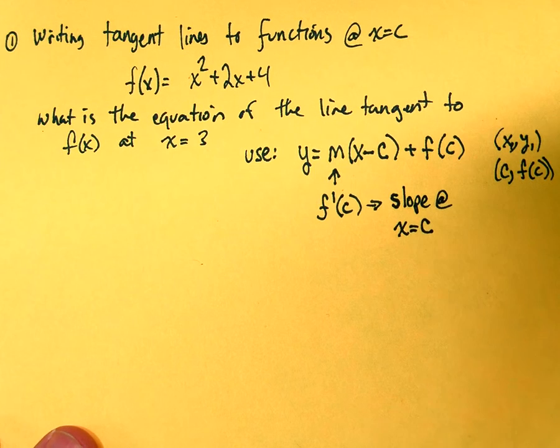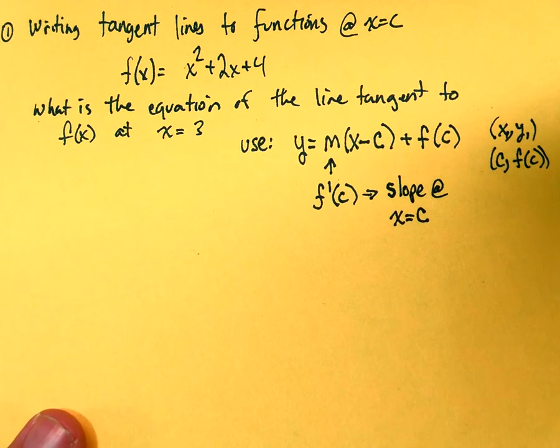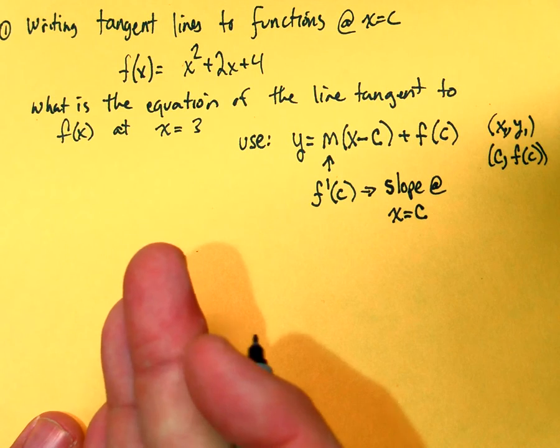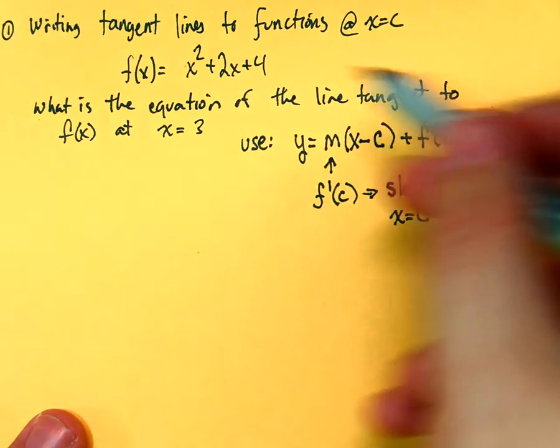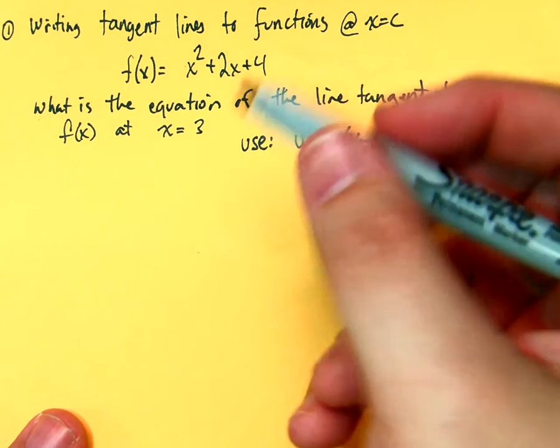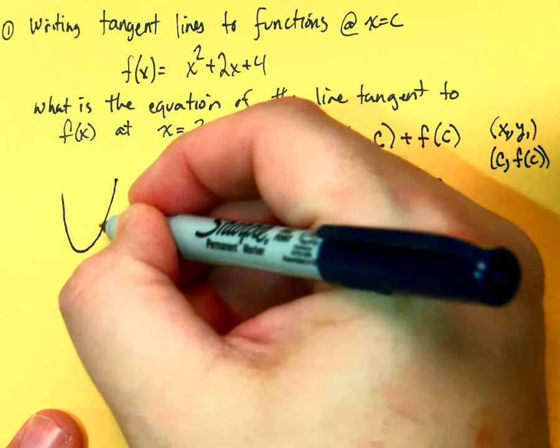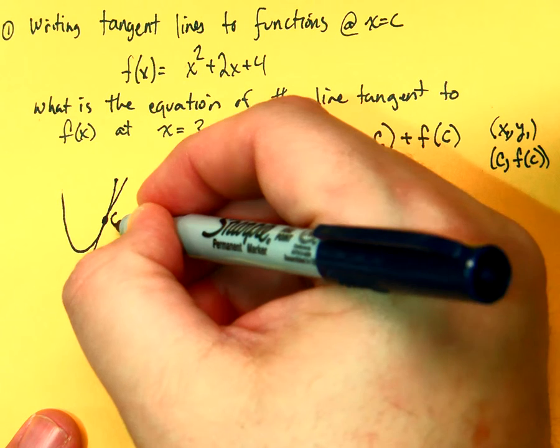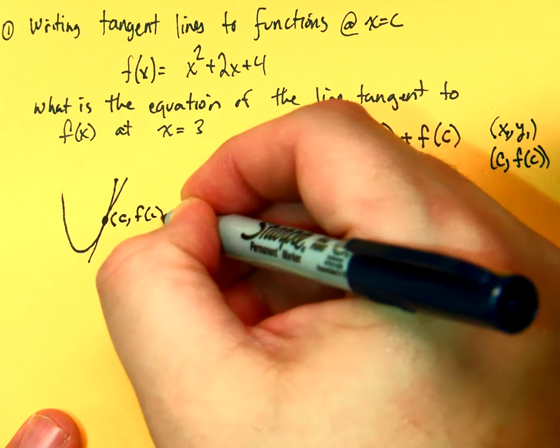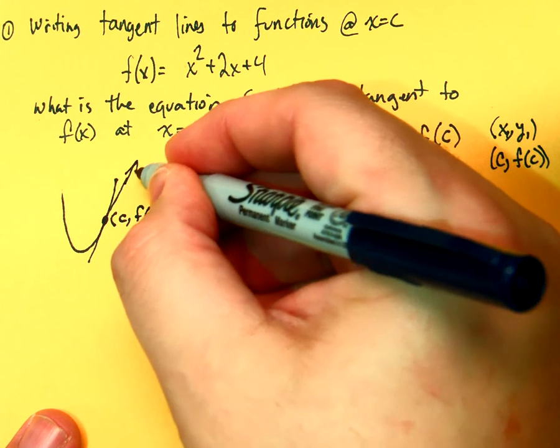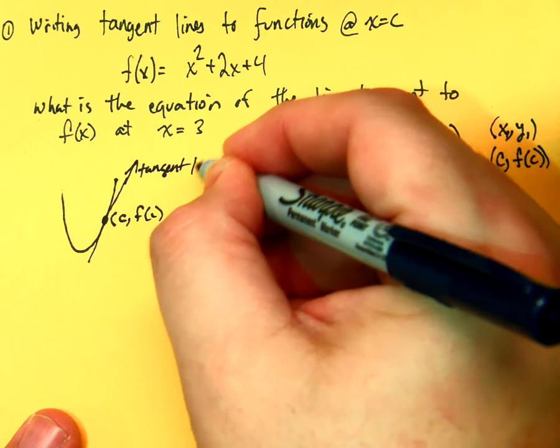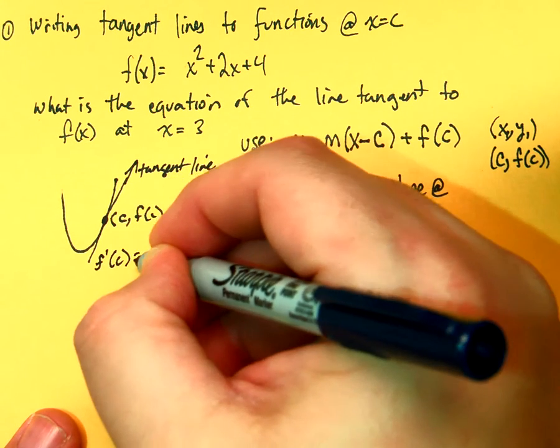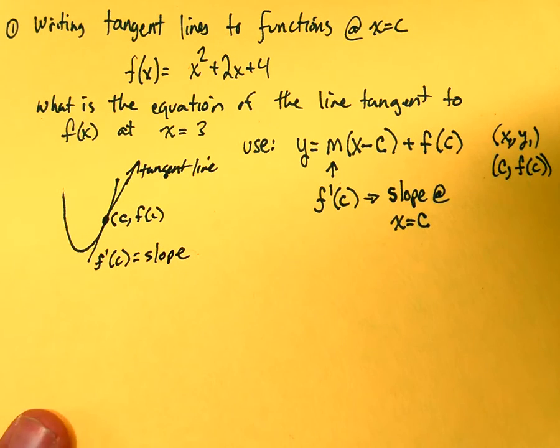So, when we're calculating our slope, we need to take the derivative, plug in the x value, and that's going to give us our slope. So, the equation, it's parabolic, it's quadratic, so we're going to get something like this, and we're looking for a tangent line right here. And, that's c f of c. This is the tangent line. And, f prime of c is equal to the slope. So, that's what we're trying to build.